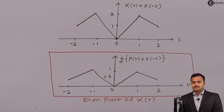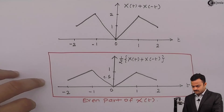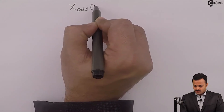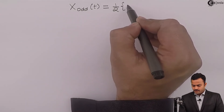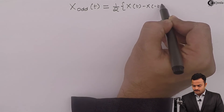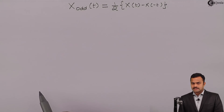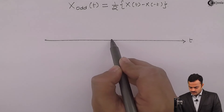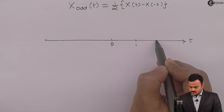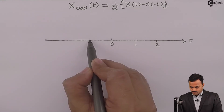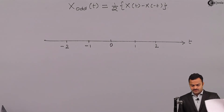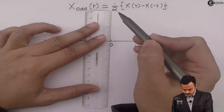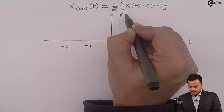You can find out the odd part now. We know the odd part of a signal is nothing but half of x(t) minus x(-t). We need to get x(t) minus x(-t). The time axis spans from minus 2 to 2, with points at minus 2, minus 1, 0, 1, 2. On the vertical axis we need to compute x(t) minus x(-t).